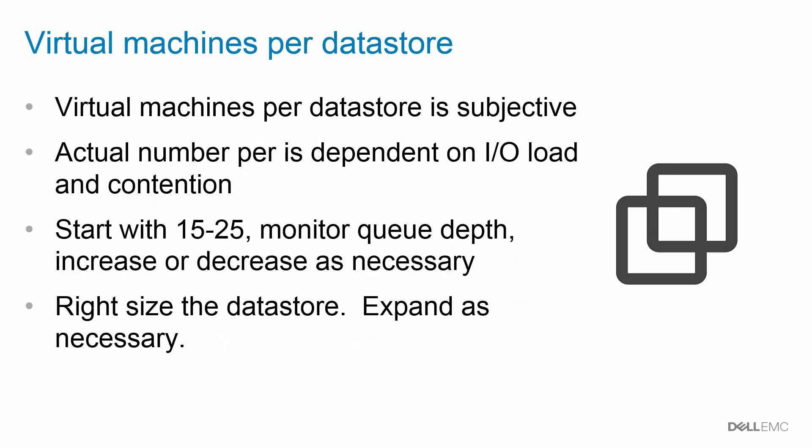A common question addressed in the guide is how many virtual machines to put on each data store. The answer is that it is completely subjective, but it is dependent on I/O load and contention. Best practice is to start by putting 15 to 25 virtual machines on the data store, monitor the queue depth for I/O contention, and increase or decrease the number of virtual machines as necessary. To control how many virtual machines go on each data store, be sure to right size it, as you can always expand it later.